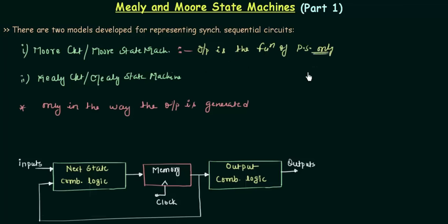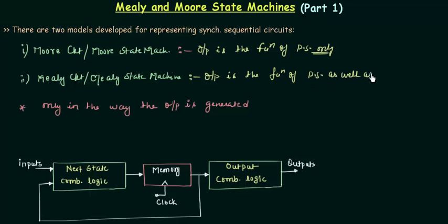The output depends only upon the present state. Whereas in the case of Mealy state machines, the output is the function of the present state as well as the input. This is the main difference between the Mealy and the Moore state machines. In this presentation we will talk about the Moore state machine, and in the next presentation we will see what the Mealy machine is.